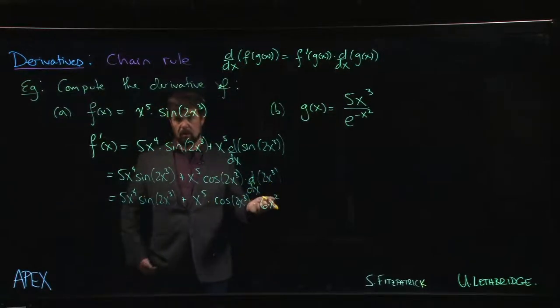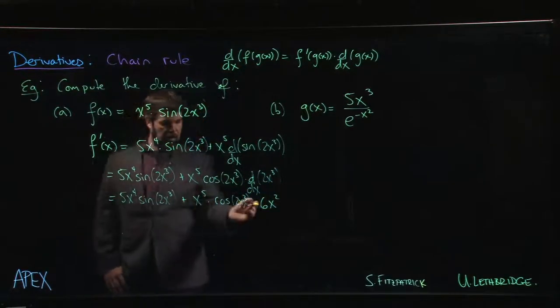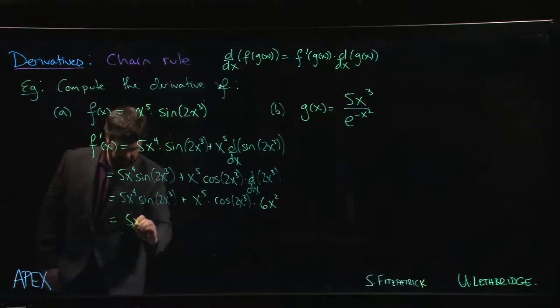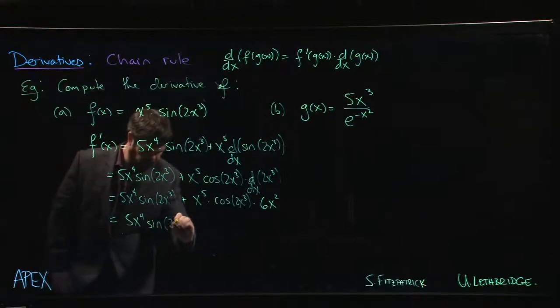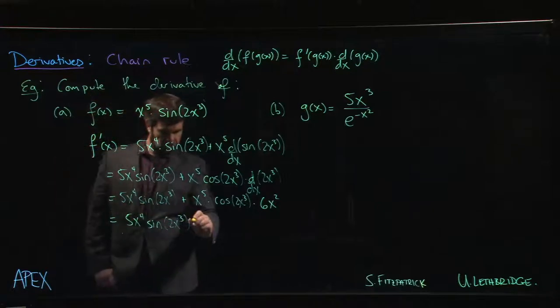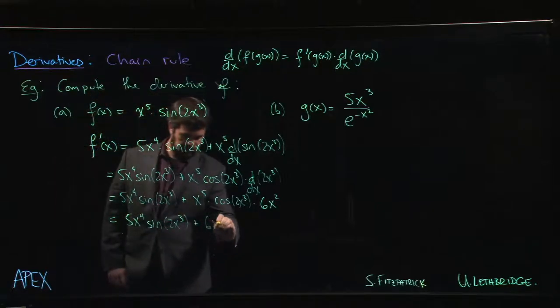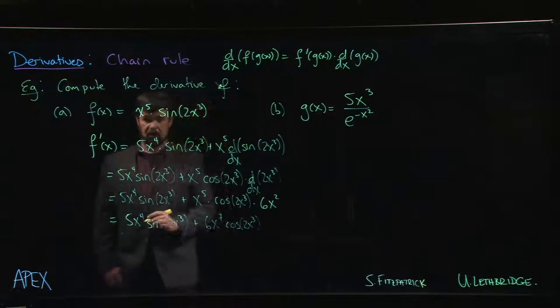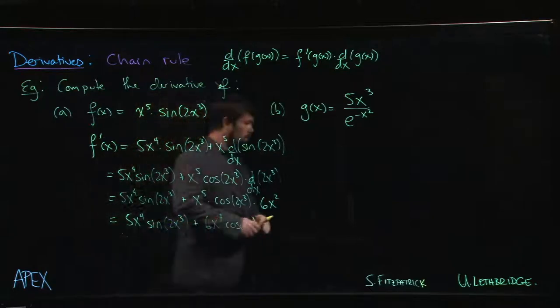We can leave it like that. If you want to take it one step further, you might choose to combine these two terms. Just make it a little bit cleaner. So we have 5x to the 4 sine of 2x cubed plus 6x to the 7 times cos of 2x cubed.